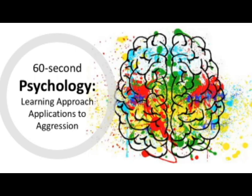It is important to remember that social learning theory doesn't only occur in real life, as there is evidence to suggest that behaviour can also be learned through observation and imitation of the media, such as films and TV, including fictional characters.